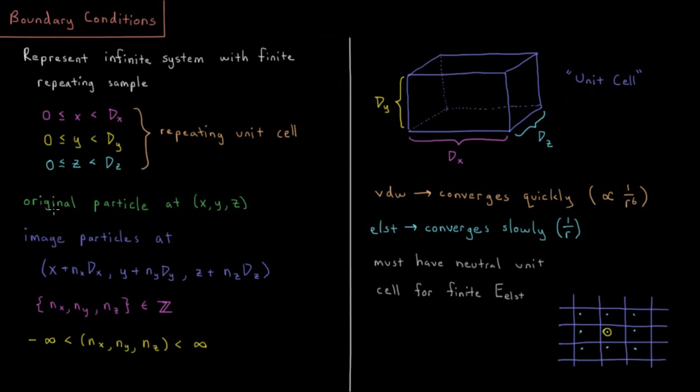So we have our original particle at coordinates x, y, and z - for example, the one I have circled here in yellow. Then we have what are called image particles at x plus nx times dx, y plus ny times dy, and z plus nz times dz.